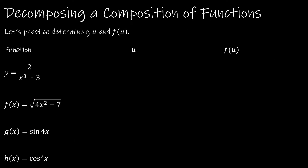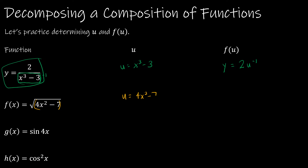Let's practice finding u and f(u). For y = 2/(x³-3), u = x³-3, and f(u) = 2u⁻¹, since the expression is in the denominator. For y = √(4x²-7), the inner function is u = 4x²-7, so f(u) = u^(1/2) because this is the square root of that function.